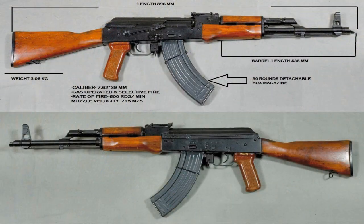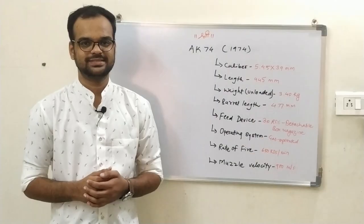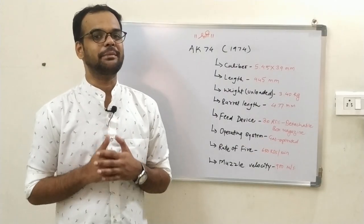The second weapon is the AKM, which came into operation in 1959. It has a caliber of 7.62×39mm, overall length of 896mm, unloaded weight of 3.06kg, barrel length of 436mm, feeding device is a 30-round detachable box magazine, and it is a gas-operated firearm which can fire 600 rounds per minute with a muzzle velocity of 715 meters per second.